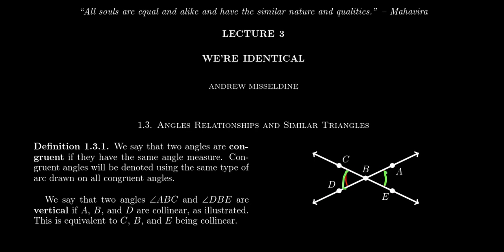Then we say that two angles are vertical if they're opposite each other with respect to this intersection of the lines. So we have one set of vertical angles right here, and we have another set right here. So given the intersection of two lines, you always get these two pairs of vertical angles. The terminology is just that — it's just the terminology. The reason why vertical angles are important in this conversation of congruence is that vertical angles are necessarily congruent to each other.